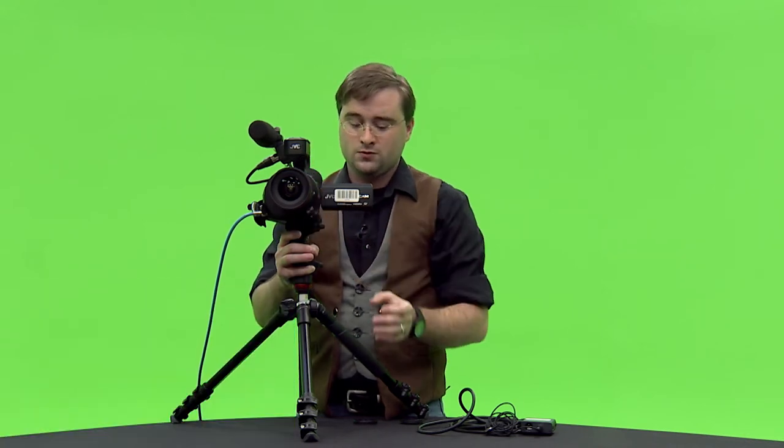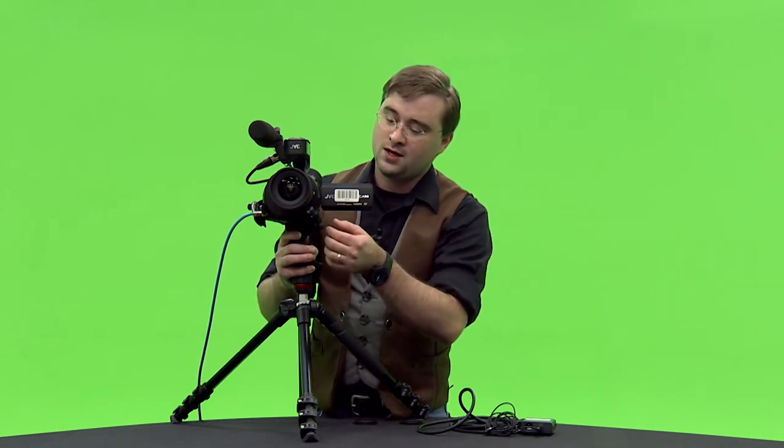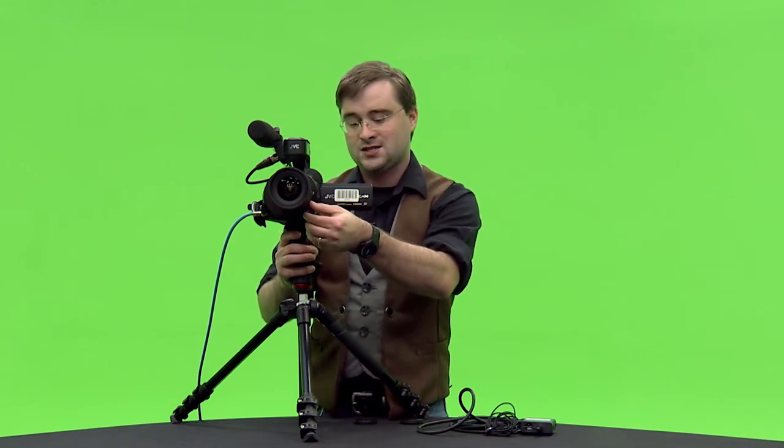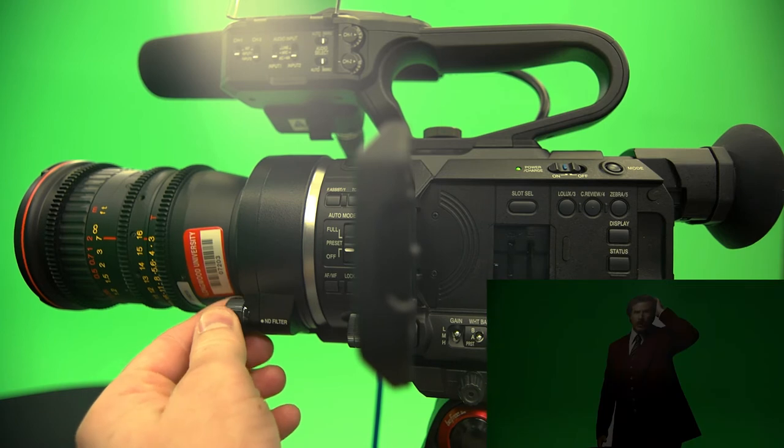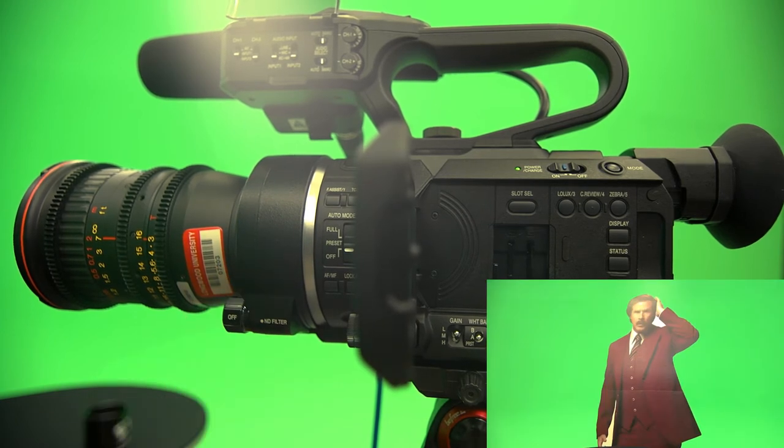If you are shooting outdoors in July and it's noon and it's really really bright outside and you need to further adjust how much light's coming into your camera, there's the ND filter on the front of the camera here. This is basically sunglasses for your camera. You turn this and it's going to basically filter out some of that bright light.